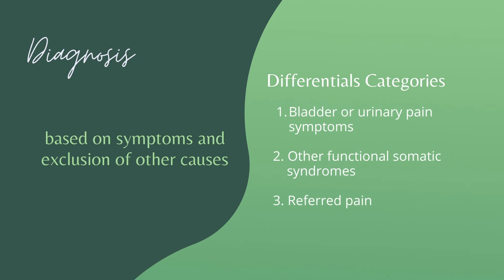Differential diagnoses are categorized into three. First is bladder and urinary pain symptoms, such as overactive bladder and endometriosis. Second is other functional somatic syndromes. And lastly is referral pain, such as vulvodynia and chronic urethral syndrome.